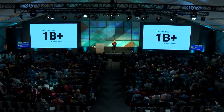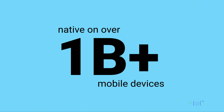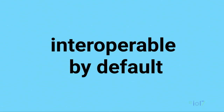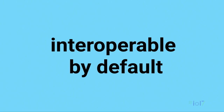I'm proud to announce Polymer 2.0. Polymer 2.0 is based on web platform standards that are natively supported on over 1 billion mobile devices. Because of advancements in the platform, Polymer 2.0 is one quarter the size of 1.0. And all of this makes web components built with Polymer 2.0 interoperable by default, meaning you can use them more easily in popular JavaScript frameworks.